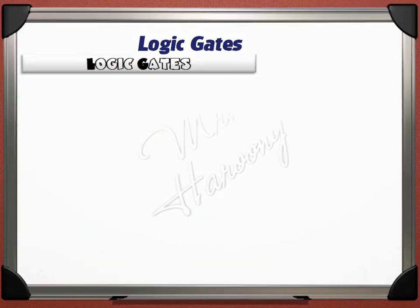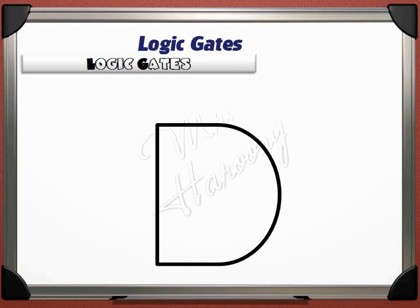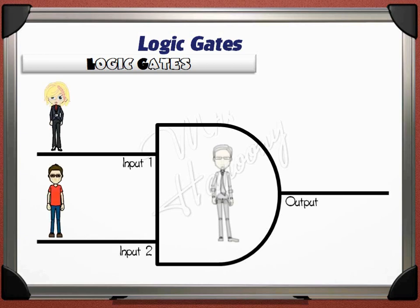How does a logic gate work? In this lecture we keep away from the complications of electricity. We do not need to discuss how they electrically work — we just want to discuss how they logically work. This is the symbol of a logic gate. This logic gate is a circuit component that has two inputs and one output, and it controls switching a lamp on and off.